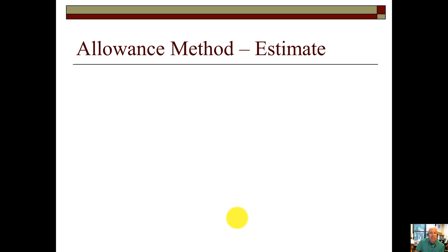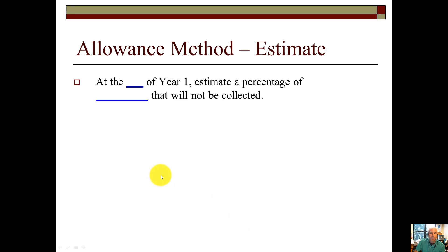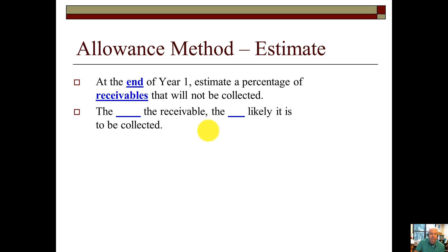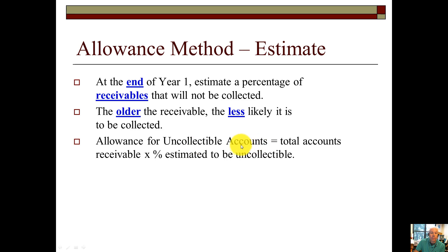Under accounting there are two methods: the allowance method, where we make an estimate of bad debt, and the direct write-off method, which is not acceptable for GAAP. The allowance method works as follows: at the end of year one, a percentage estimate has to be made for the receivables you don't expect to collect. The older the receivable, the less likely you are to collect it. The allowance for uncollectable accounts — a contra asset account with a credit balance — equals total accounts receivable times the percent estimated to be uncollectable.